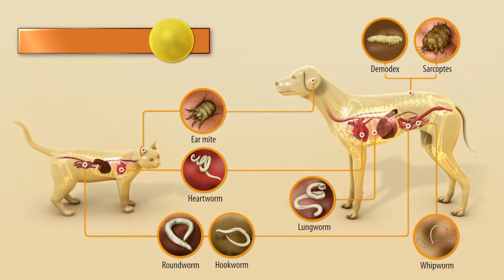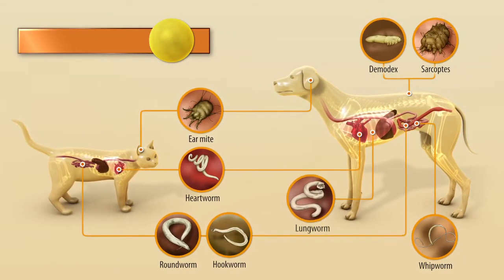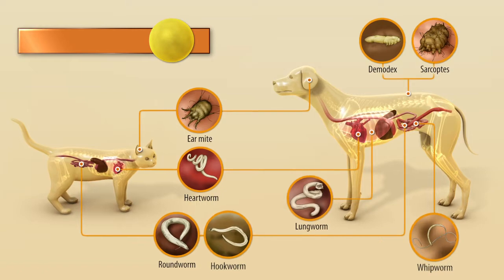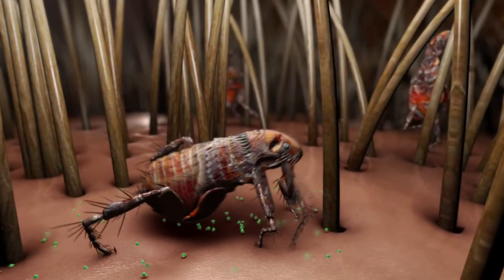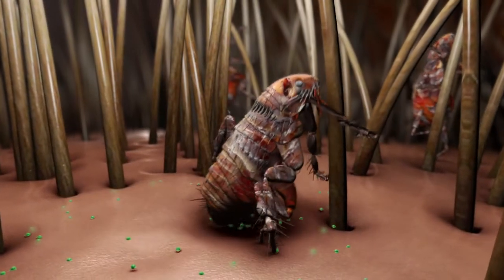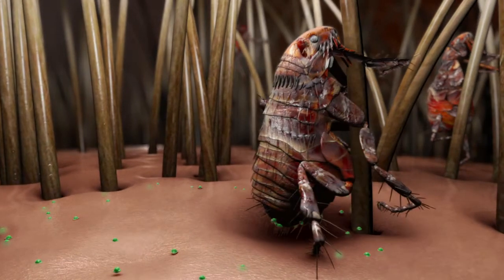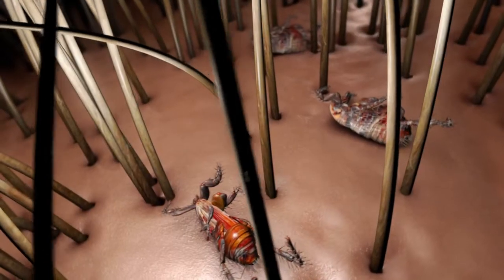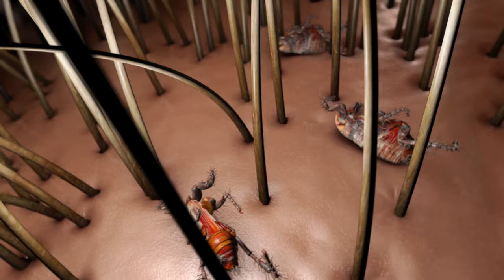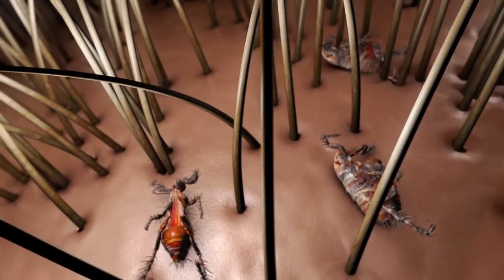The product acts against various internal and external parasites. Fleas do not have to bite the animal — the active ingredient is absorbed through the flea's body surface and causes an overstimulation of the nervous system, resulting in the death of the parasite.